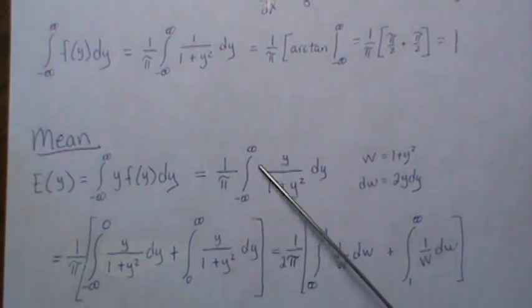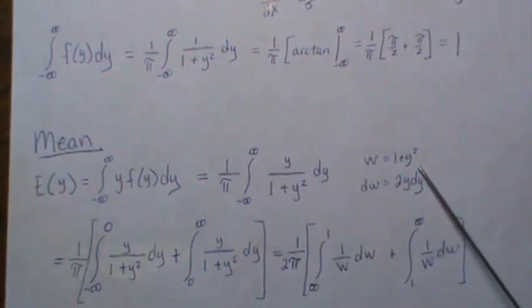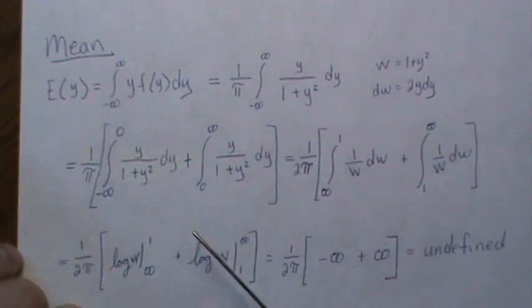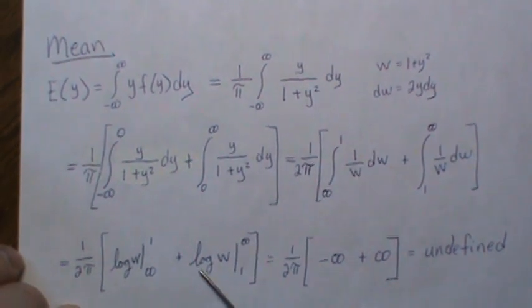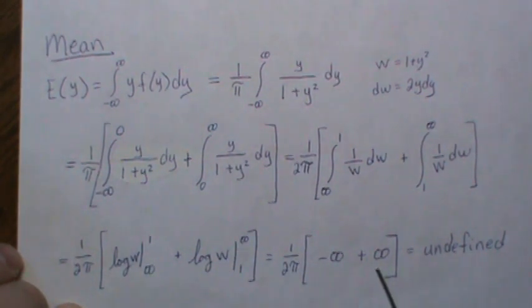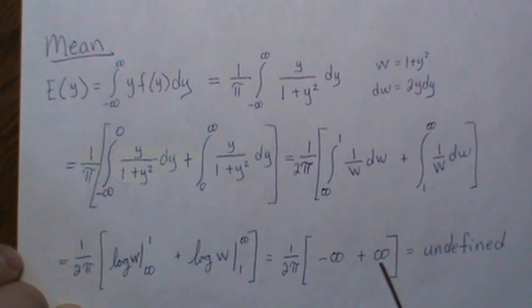When you look at the limits of integration it goes from one to infinity and one to infinity. This is just the log of w from the limits, and when you plug in one you get zero, but infinity it goes to infinity. So it's zero minus infinity, that's this piece, and then over here you get infinity minus zero, so you get the infinity minus infinity relationship which is undefined.